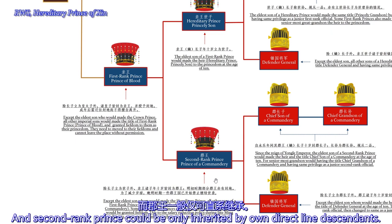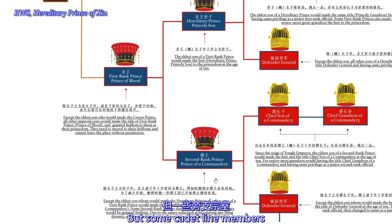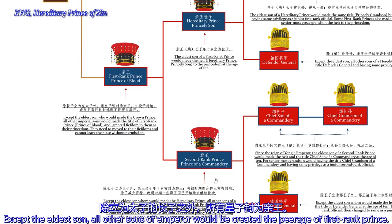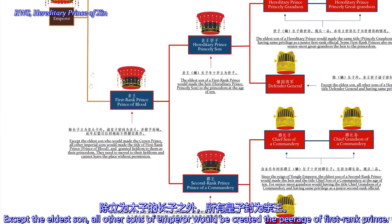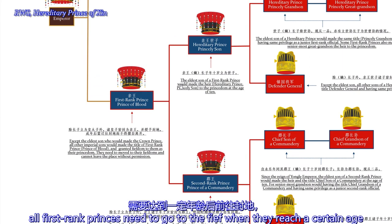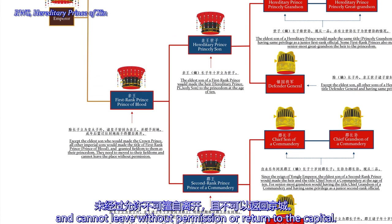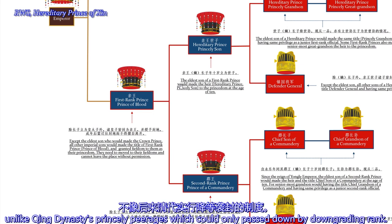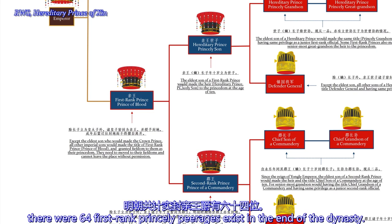Second-ranked princes could be inherited by one's own direct line descendants, but some cadet-line members also obtained the succession of second princely titles through improper means. Except for the eldest son, all other sons of the Emperor were created first-ranked princes. After establishing the location of the fief, all first-ranked princes needed to go to the fief at a certain age and could not leave without permission or return to the capital. The princely title could be passed down limitlessly — unlike the Qing Dynasty's system of downgrading rank. Due to this system, there were 64 first-ranked princely titles in existence by the end of the dynasty.